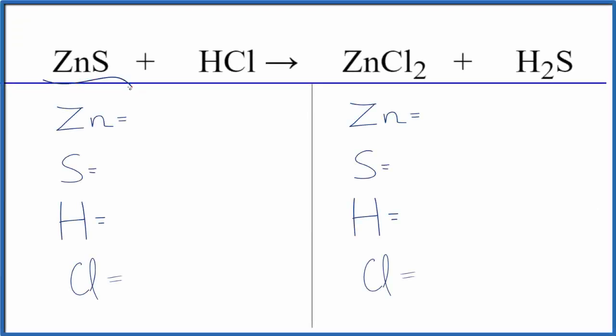Let's balance the equation for ZnS plus HCl. This is zinc sulfide and this is hydrochloric acid, a strong acid.